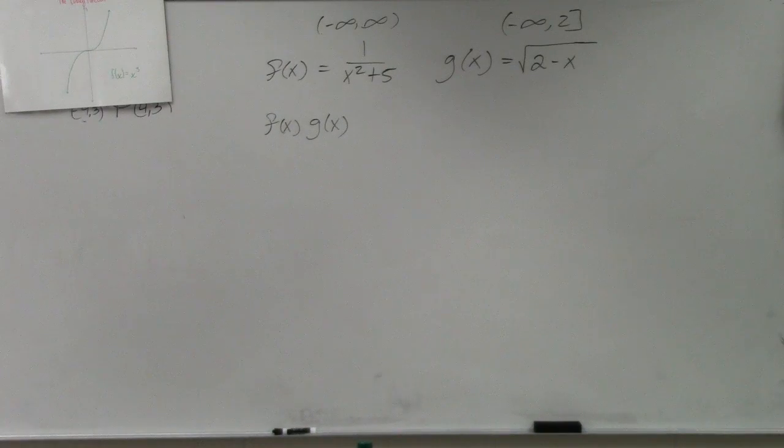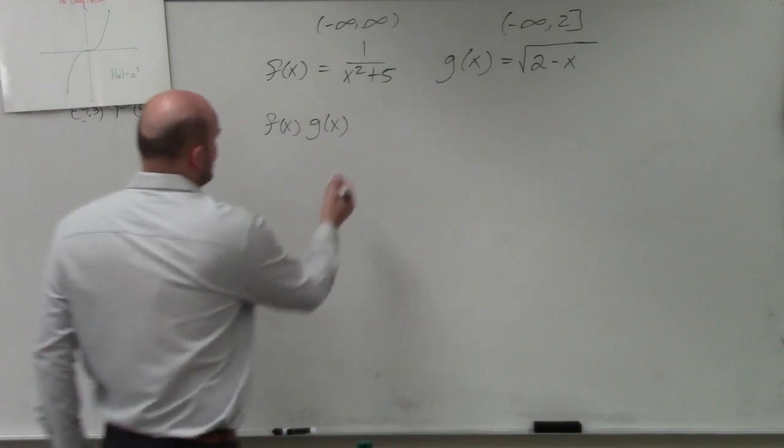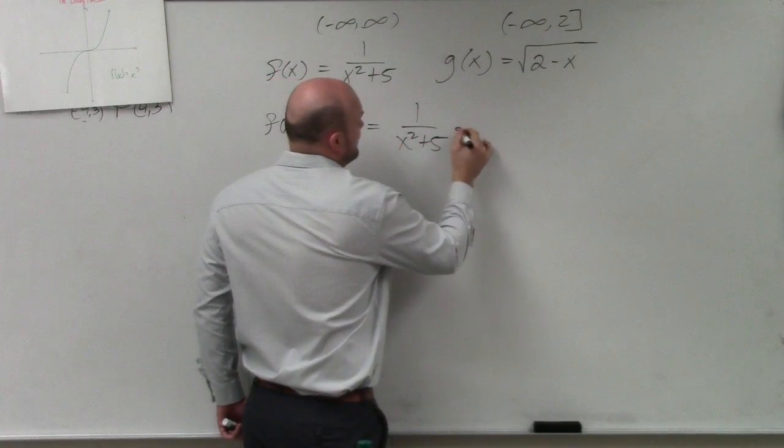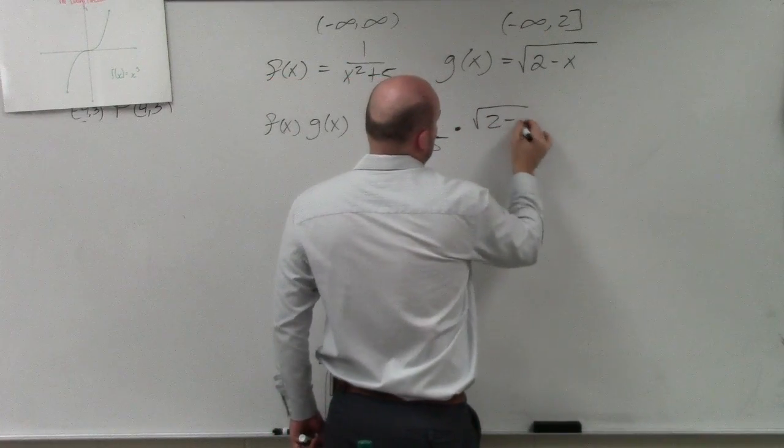That you can multiply. So in reality, in this problem, I have 1 over x squared plus 5 times the square root of 2 minus x.